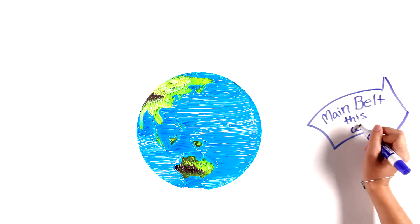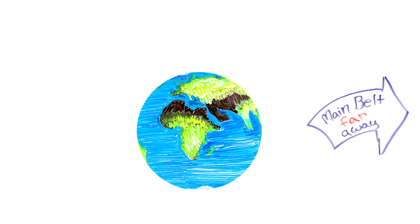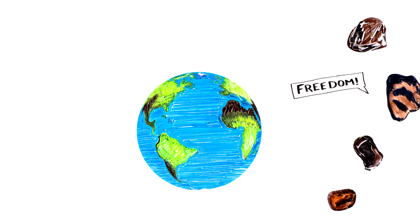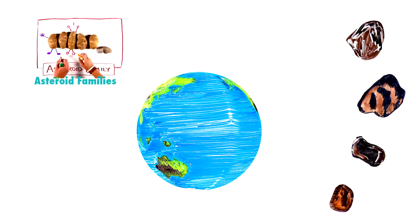Most of the space rocks in the solar system live far away from the Earth in the asteroid Main Belt. Some asteroids, though, manage to slip out of the Main Belt through interactions with Jupiter, as we showed in the first video in this series.